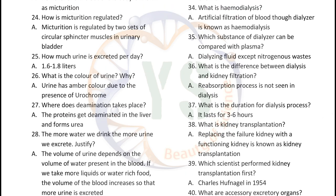What is hemodialysis? Artificial filtration of blood through a dialyzer is known as hemodialysis. Which substance of the dialyzer can be compared with plasma? Dialyzing fluid can be compared with plasma except for nitrogenous wastes. What is the difference between dialysis and kidney filtration? Reabsorption process is not seen in dialysis but it is seen in kidney filtration.